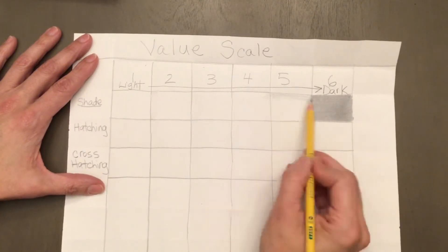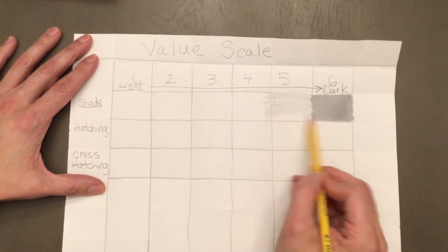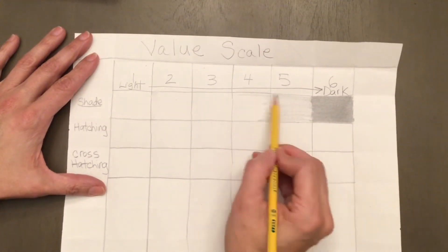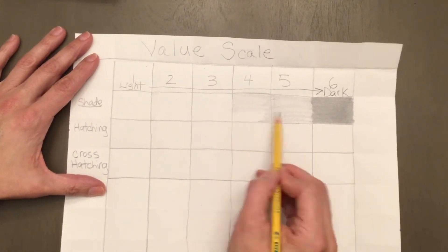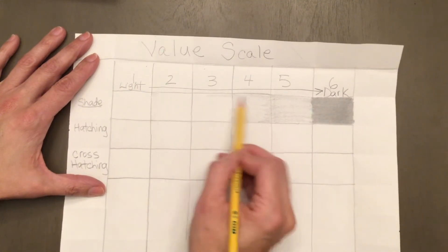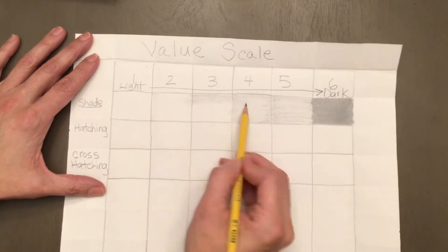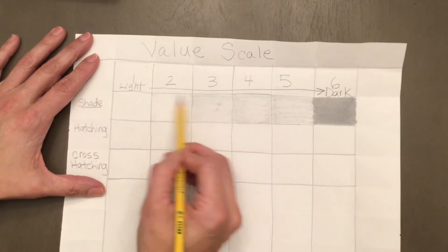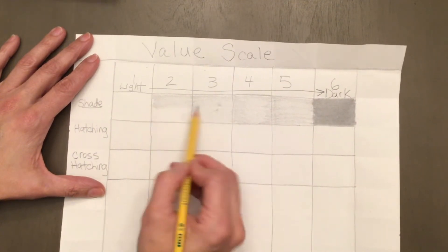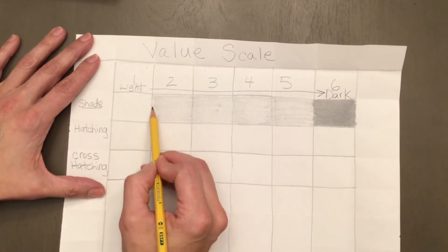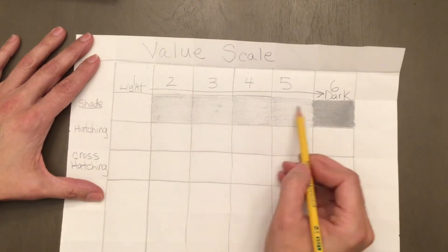Now we're going to add value to number five, four, three, and two very lightly, and number one will stay white. Once we do this, we're going to add darker value to number five.